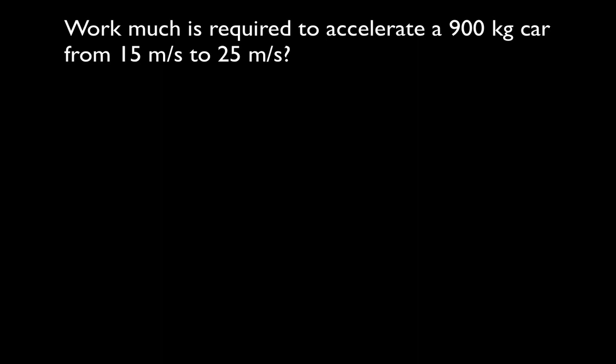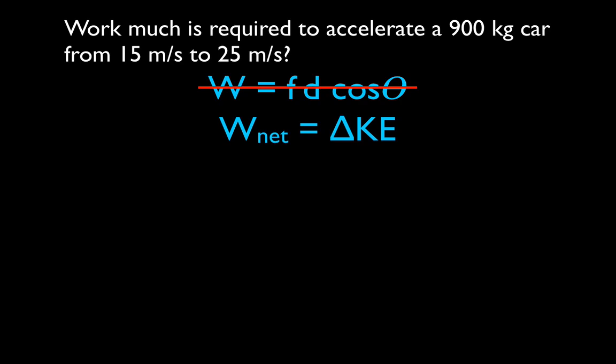Now we have a car with a mass of 900 kilograms that is already moving, and we're going to speed it up. We want to know how much work is done. Once again, we weren't given a force or the distance over which it's applied, so we have to use the work-energy principle. Since we have the mass and both velocities, we can calculate the change in kinetic energy, and therefore how much work was done on the object.